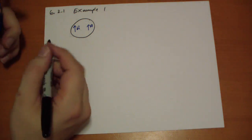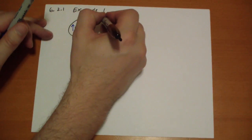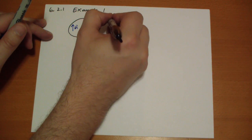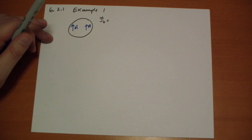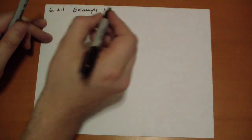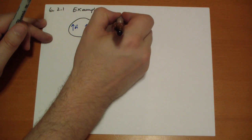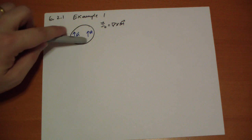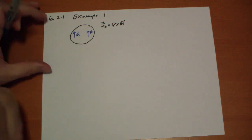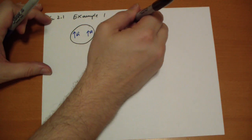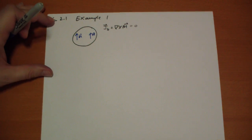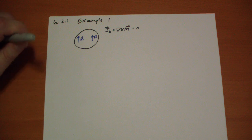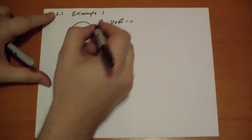So we calculate the bound volume current on the inside. That's going to be the curl of the M-vector. On the inside, the curl of M-vector is going to be zero, so there's no bound current flowing on the inside.